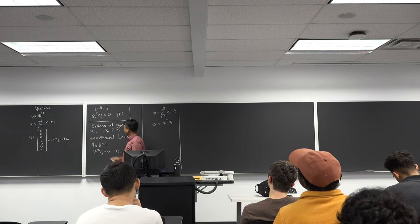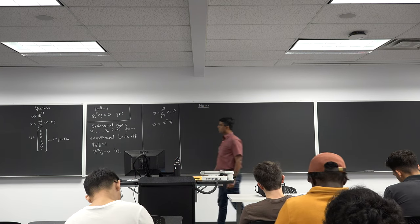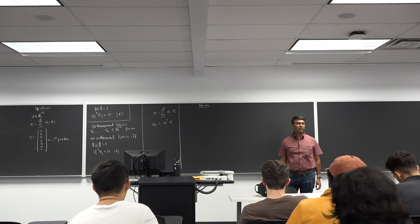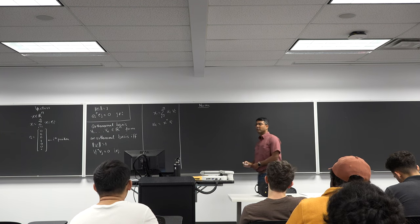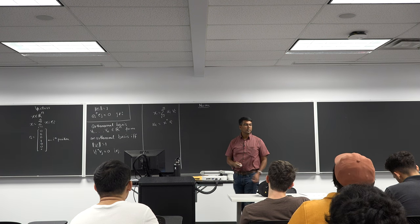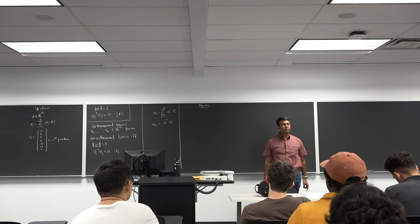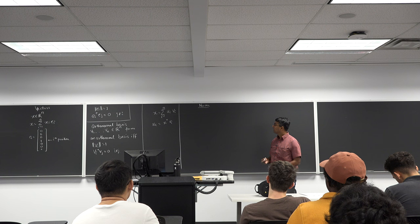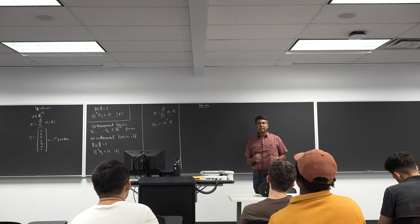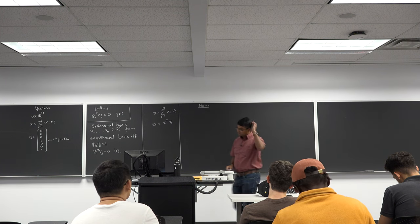Now let's talk about norms. Has anyone studied the formal definition of norm before in calculus or analysis? The Euclidean norm — the inner product of a vector with itself — is one kind of norm, but there is a broader definition.